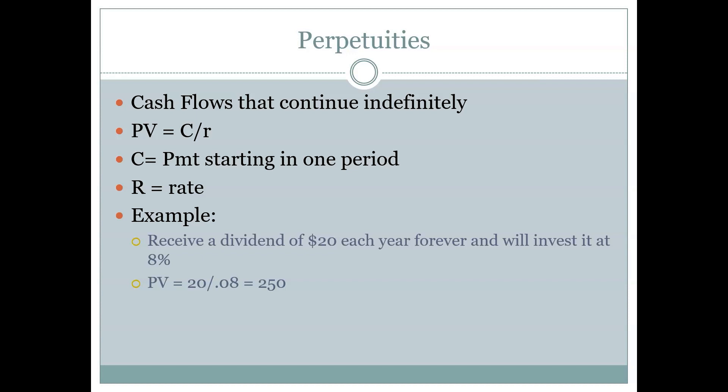For a simple example: imagine we're promised a dividend from a firm of $20 each year forever, and we're going to invest it at a rate of 8%. The present value is 20 divided by 0.08, which equals $250. That means I should be willing to pay $250 for the right to receive $20 a year forever — I'd trade $250 now to get $20 a year, forever and ever.